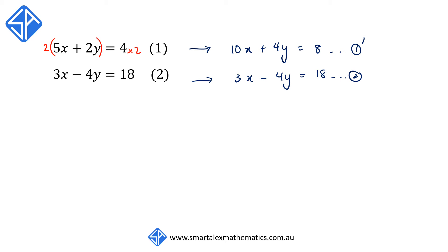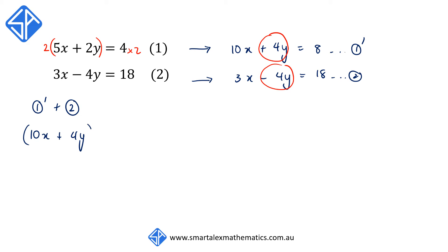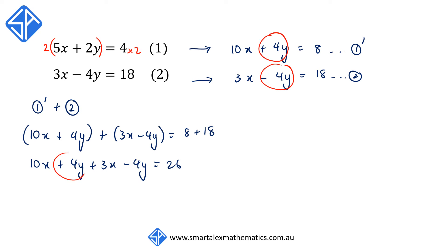We now have a common term: plus 4y and minus 4y. Because the signs are different — one is plus, one is minus — we add equation 1 dash and equation 2. On the left hand side we have 10x plus 4y plus 3x minus 4y, and on the right hand side 8 plus 18. The plus 4y and minus 4y cancel out, leaving us with 13x is equal to 26. Dividing both sides by 13, we get x is equal to 2.